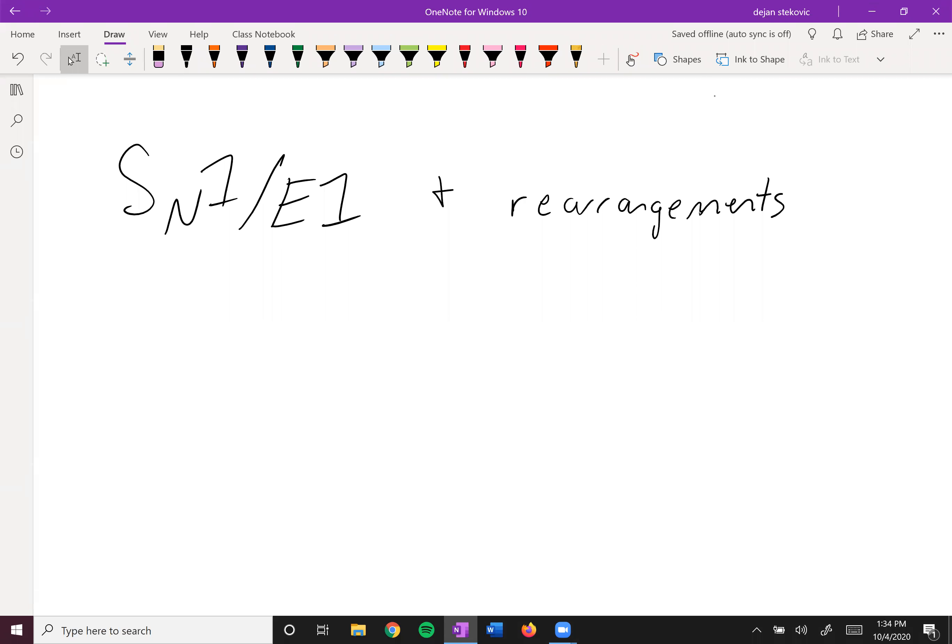So as we saw in the SN1 and E1 reaction, the rate-determining step is the formation of this carbocation. Previously, we learned that when we have carbocations, we can have carbocation rearrangement. Anytime we do SN1 and E1 reactions, we have to keep an eye out for any carbocation rearrangements.